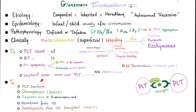With ristocetin, aggregation is perfect. On peripheral smear, the platelets are normal size — they are not giant, not macro, and there is no thrombocytopenia. Treatment includes platelet transfusion, desmopressin, tranexamic acid, and recombinant factor 7. When everything hits the fan, go with hematopoietic stem cell transplant.